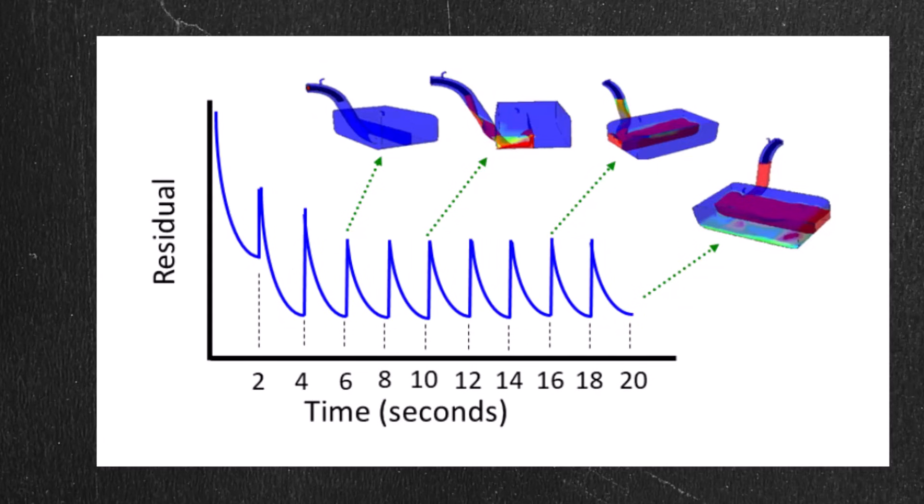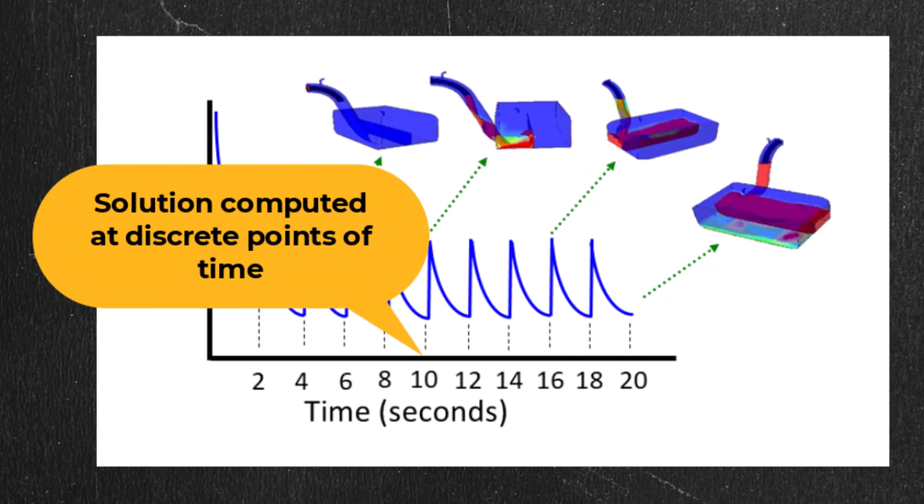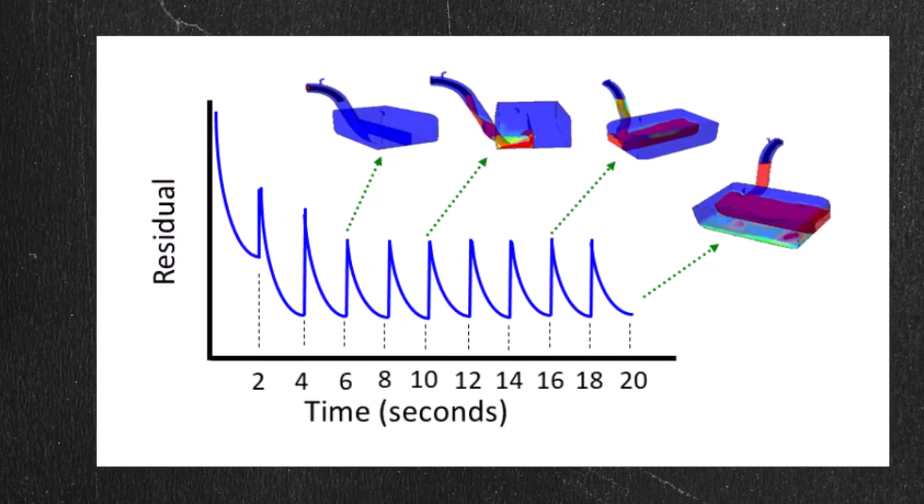There is one final thing I want to point out in this example, because it might be confusing. When you do a transient calculation, the solution is only computed at discrete points in time. In the example here where the time step size is 2 seconds, that means you know what the flow is at 2 seconds, at 4 seconds, at 6 seconds, and so on. However, you do not know what the solution is at 1 second, or 3 seconds, or any time in between the solution points. Another way to think about this is that the x-axis is labeled with time so that you can see the time at the end of the time step. But it does not mean that if you stop iterating right in the middle of the points, for instance the points labeled as 2 seconds and 4 seconds, that that would be the same as the solution for time equal to 3 seconds. It would just mean that you have an unconverged solution for the time equal to 4 seconds, which is what you are iterating towards.